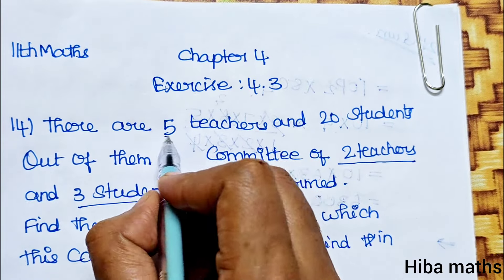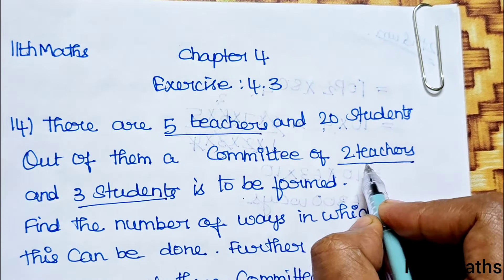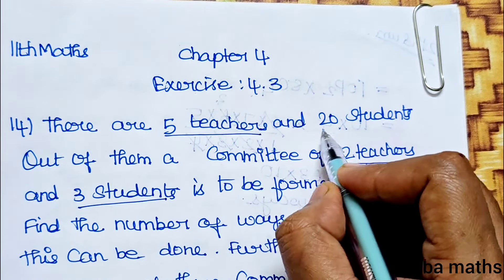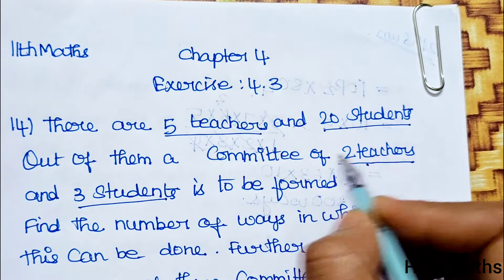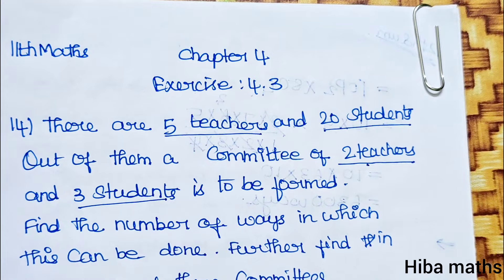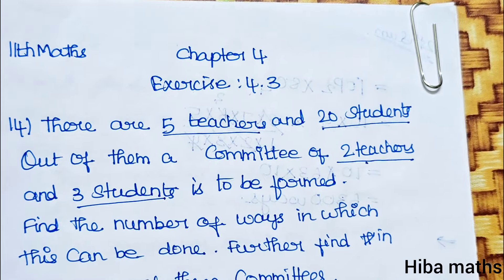So, total 5 teachers — we select 2 teachers — and from 20 students, we select 3 students.